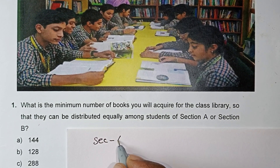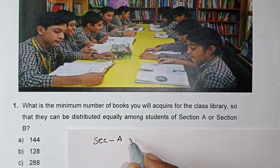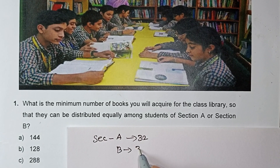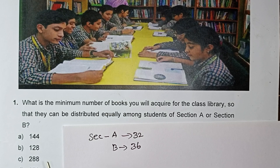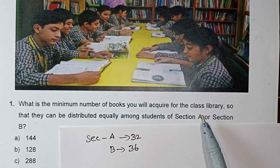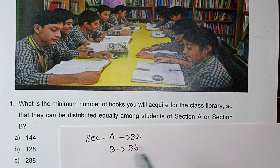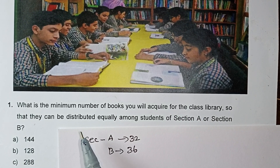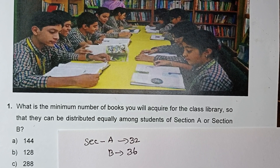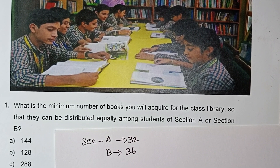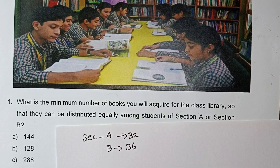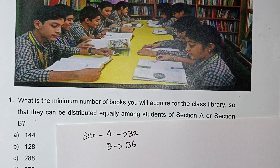The first question: section A has 32 students and section B has 36 students. What is the minimum number of books you will acquire for the class library so that they can be distributed equally among the students of section A or section B? So whether students come from section A or section B, the books should be equally distributed.